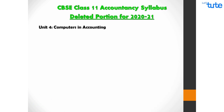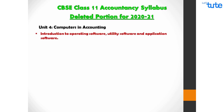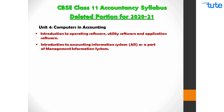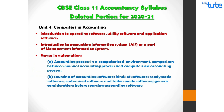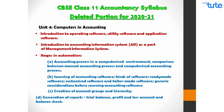The last deletion is under Part B Unit 4 Computers in Accounting. The following topics are deleted for this year: Introduction to Operating Software, Utility Software and Application Software; Introduction to Accounting Information System (AIS) as part of Management Information System; Stages in Automation; Accounting Process in Computerized Accounting; Comparison between Manual and Computerized Accounting Process; Sources of Accounting Information; Kinds of Software — Readymade, Customized and Tailor Made Software; General Considerations Before Sourcing Accounting Software; Creation of Account Groups and Hierarchy; and Generation of Reports including Trial Balance, Profit and Loss Account and Balance Sheet.